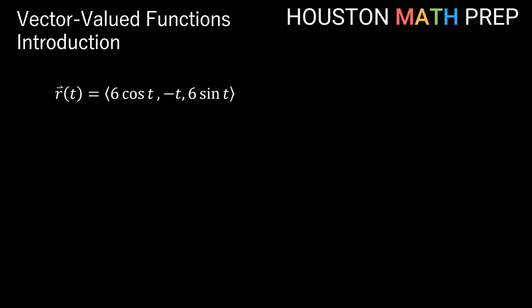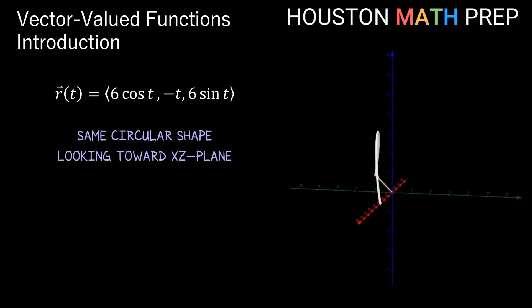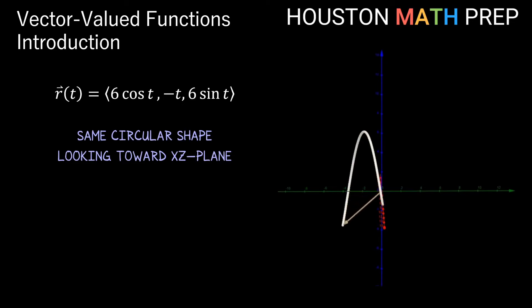Let's again change our constant component to something else. So here I've changed it to be negative t. We'll still have our same circular shape in terms of x and z, but now as we allow the values for t to get larger, the y component will be getting more and more negative.